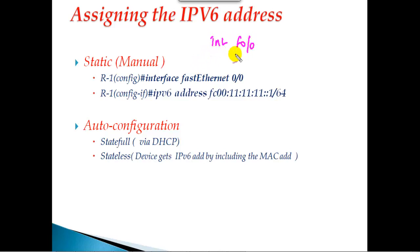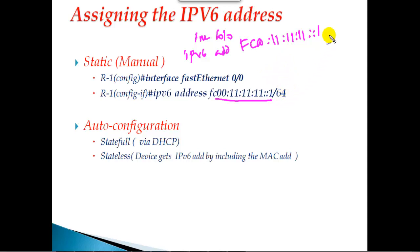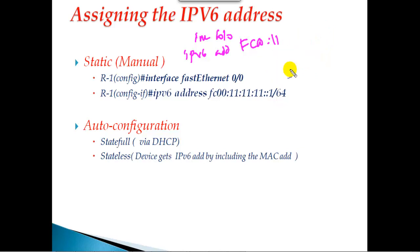To assign the IPv6 address, we go to interface f0/0. Once we're in interface mode, instead of 'ip address' we say 'ipv6 address', followed by the IPv6 address — for example fc00:11:11:11::1. Then we define the subnet mask. In IPv6 we don't use values like 255.255.255.0; instead we define it as a slash value. The default slash value for IPv6 is /64, meaning the first 64 bits are the global prefix and the remaining 64 bits are the interface ID.